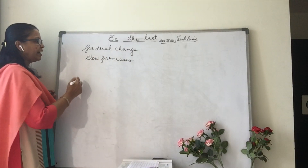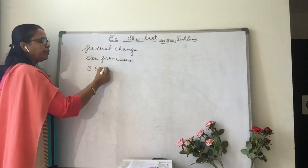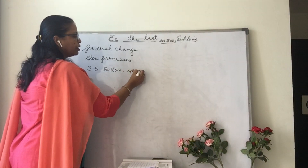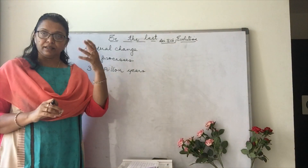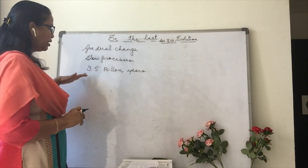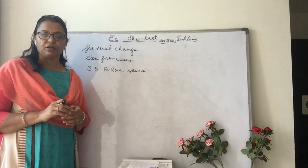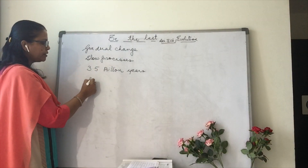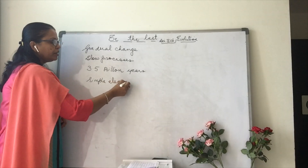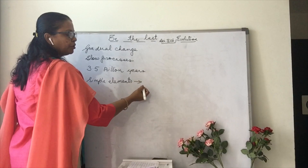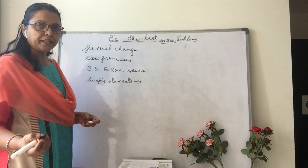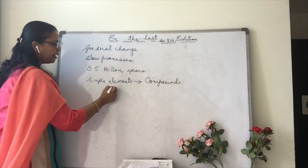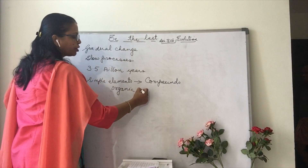For studying about this, let's recollect what the earth was like 3.5 billion years ago. Before 3.5 billion years ago, there was no life on earth. At that time, only simple elements were present. These simple elements converted into organic as well as inorganic compounds.